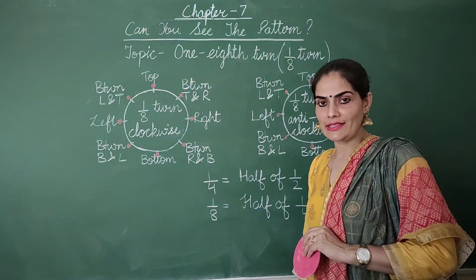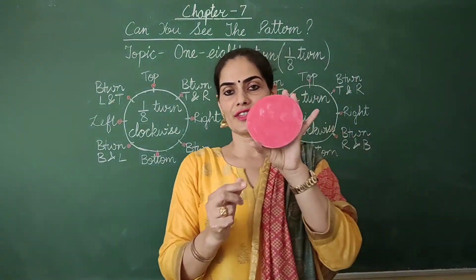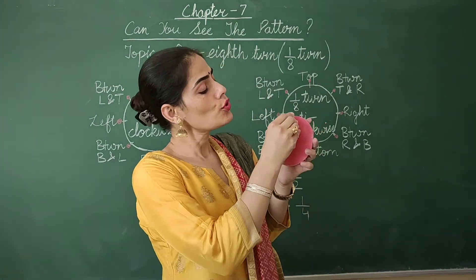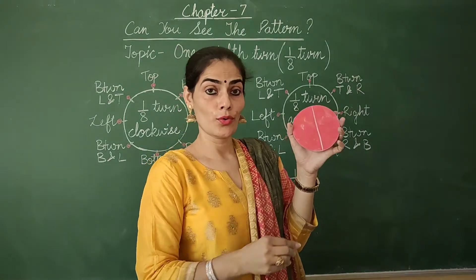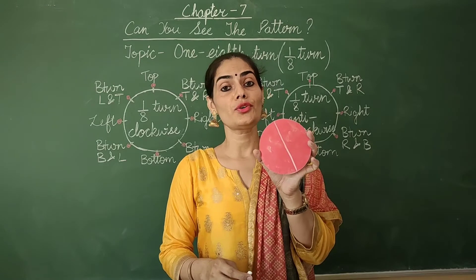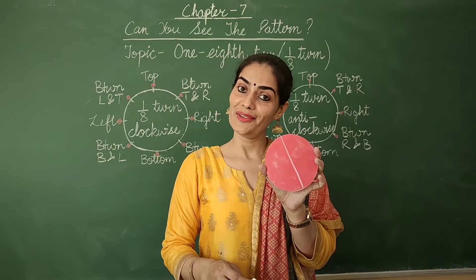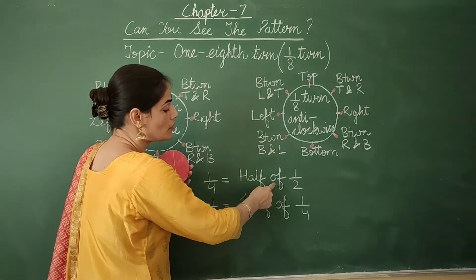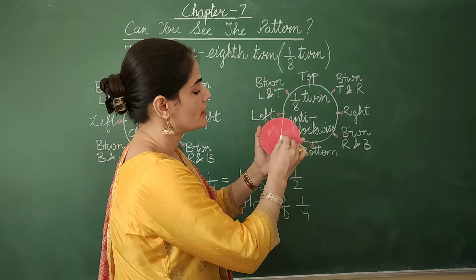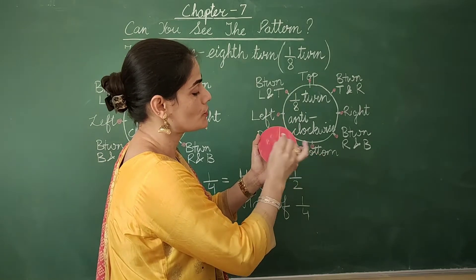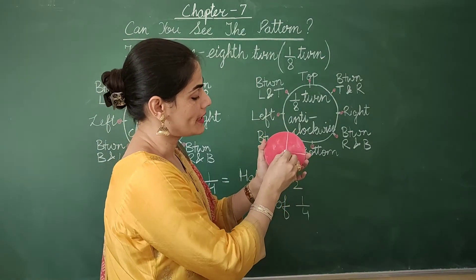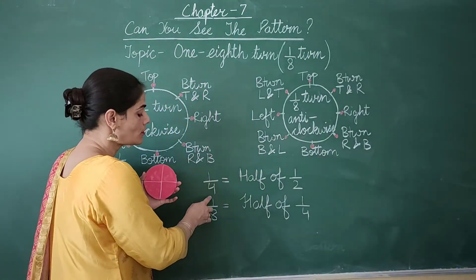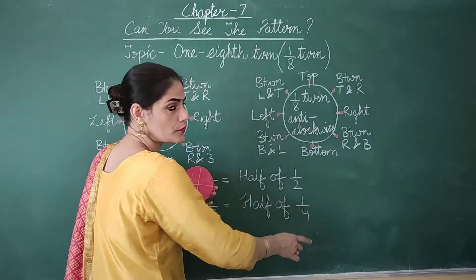Before I explain this one-eighth turn, just observe this. This is one whole circle. Two halves make one whole, or I can say half is equal to half of whole. Now, one-fourth is equal to half of half. That means this half is also required to be divided into halves, so I get one-fourth. Similarly, one-eighth is equal to half of a quarter, or half of one-fourth.